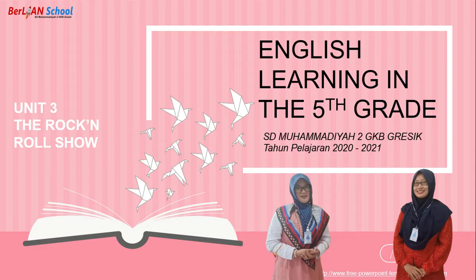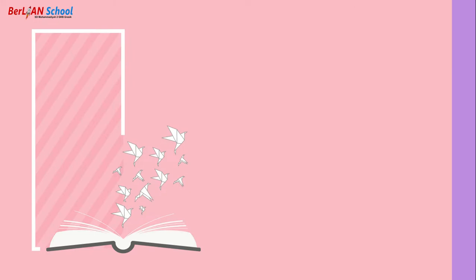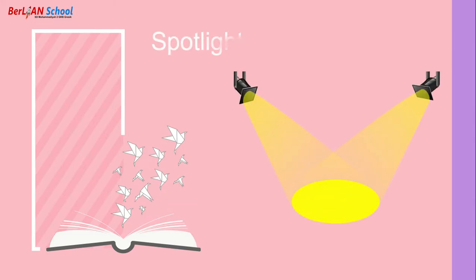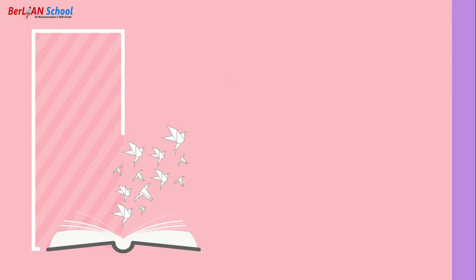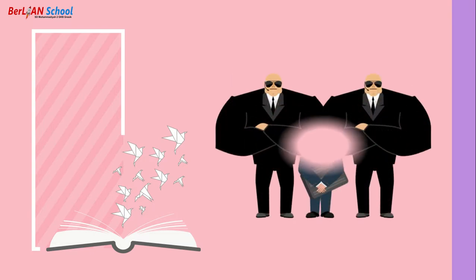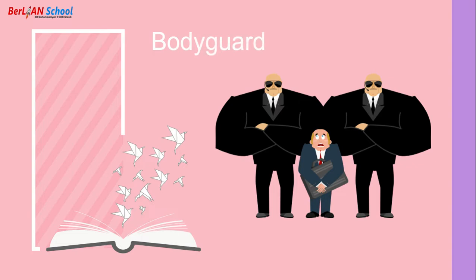Today we learn about Unit 3: The Rock and Roll Show. First, I will explain about the vocabulary in this unit. 1. Spotlight. 2. Bodyguard.